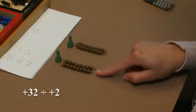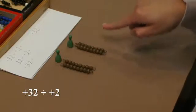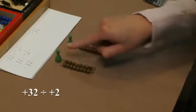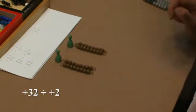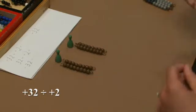So the students can see that positive 32 divided by positive 2 would leave each Skittle with positive 16. So they can write that down.